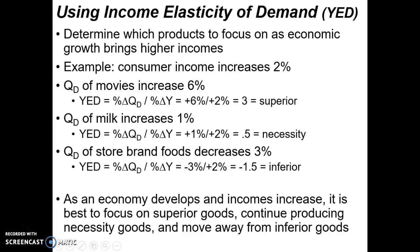Finally, we have store brand foods. In this case, there's a 3% decrease in quantity demanded for store brand goods. Plugging that into the formula — negative 3% over a positive 2% increase in income — gives a value of negative 1.5. That's an inferior good. As people's incomes went up 2%, they moved away from store brand foods because they could now buy more name brand foods, which are perceived to be of better quality.